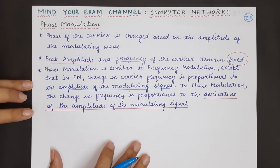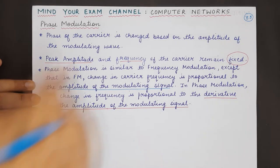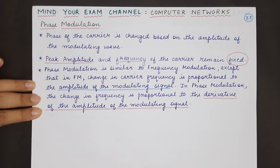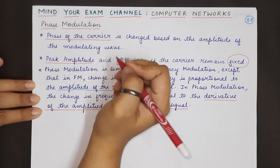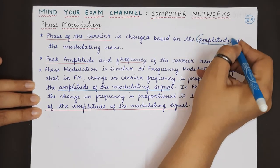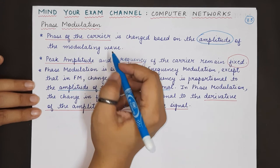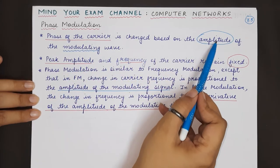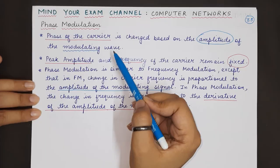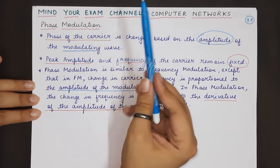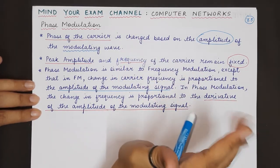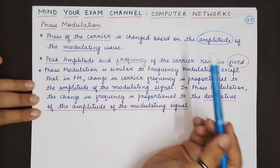The last part is phase modulation — the third type of analog to analog conversion technique. In this case, the phase of the carrier signal is being changed, and it is being changed on the basis of how the amplitude of the original modulating wave is changing. If the amplitude of the original modulating signal increases, the phase of the carrier will be changed. When there comes a reduction or a further increase in the amplitude of the modulating wave, the phase will be changed further.